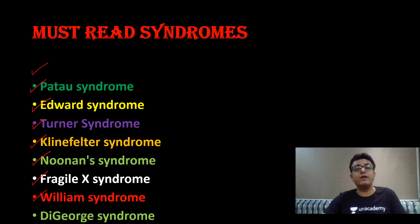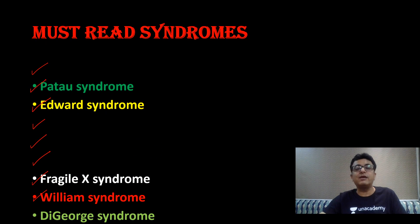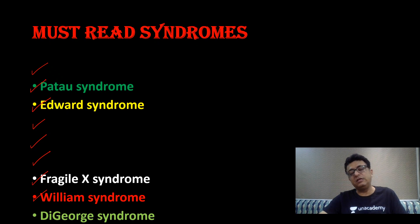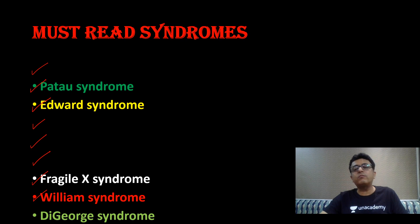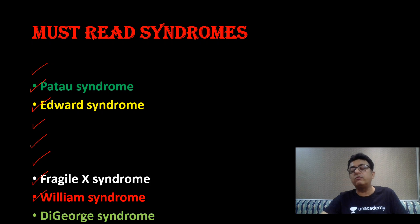Down syndrome we have already covered in my previous YouTube sessions — if you missed, go and look for it. Turner, Klinefelter, and Noonan I have covered in my first YouTube session. Today we are discussing Fragile X, Williams, and DiGeorge syndrome. These syndromes other than Down syndrome take only about 10 minutes to cover. There are a few typical points that you need to know — that is the purpose of this class.